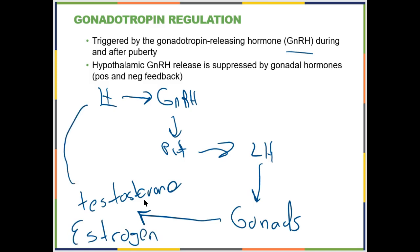There is going to be feedback onto the hypothalamus, and here it is sometimes positive feedback and sometimes negative feedback. If you get this question on the exam, just say that the gonadal hormones — testosterone and estrogen — feed back on the hypothalamus and control the release of gonadotropin-releasing hormone. That is the story of LH and FSH.